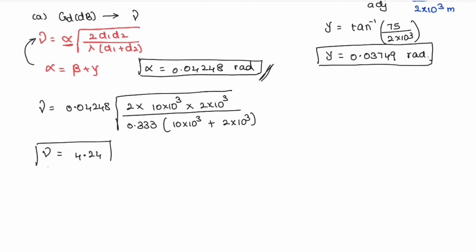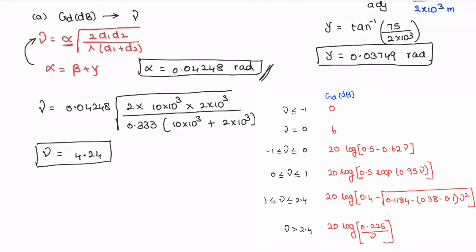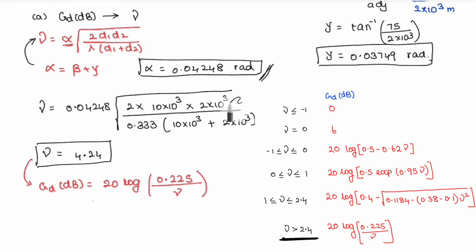V equals 4.24. Looking at the table, since V is greater than 2.4, it falls in the last range. We choose the Gd formula for that range: Gd equals 20 log(0.225 divided by V). Substituting V equals 4.24, we get a gain of minus 25 dB. The negative sign indicates a loss, so the loss due to diffraction is 25 dB.